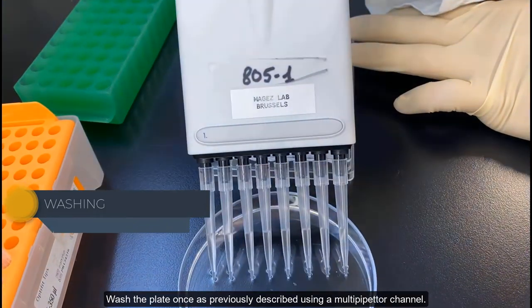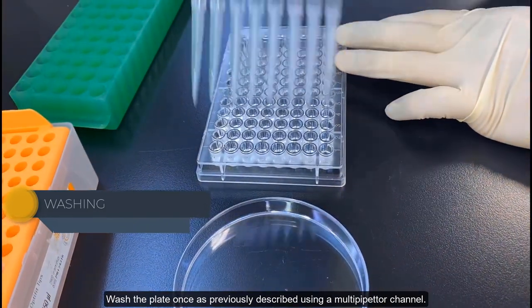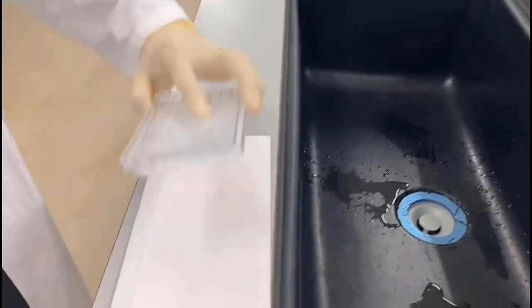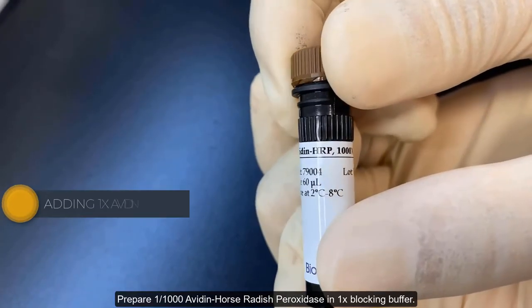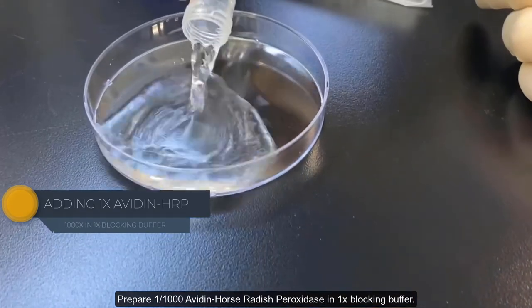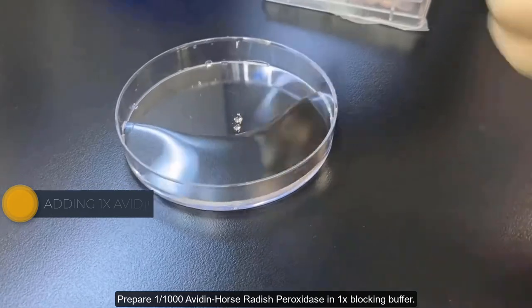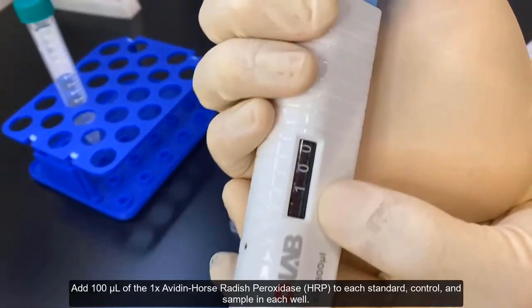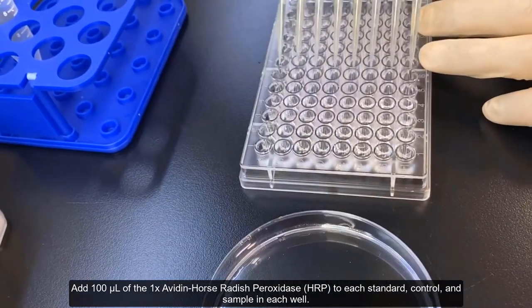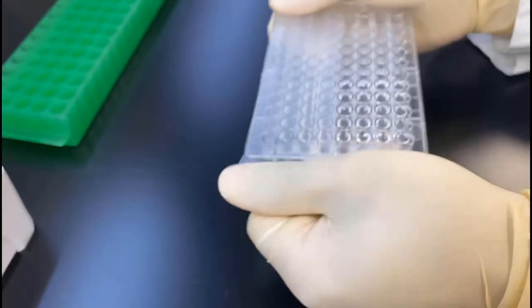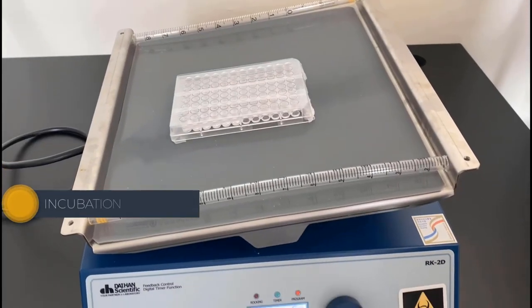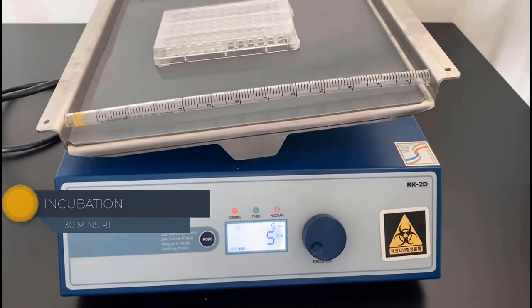Wash the plate once, as previously described using a multi-pipetter channel. Prepare 1 over 1000X avidin horseradish peroxidase in a 1X blocking buffer. Add 100 microliters of the 1X avidin horseradish peroxidase to each standard, control and sample in each well. Seal the plate with parafilm and incubate at room temperature for 30 minutes on a plate shaker at 5 RPM.